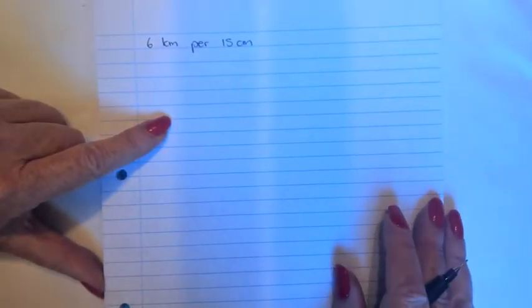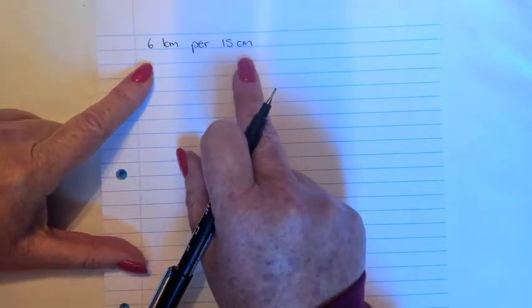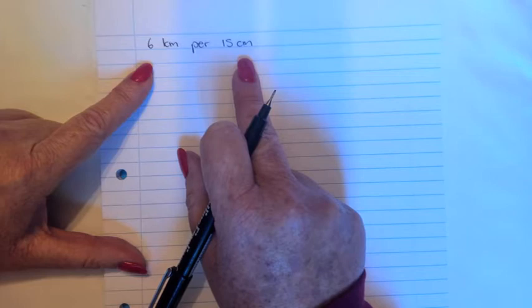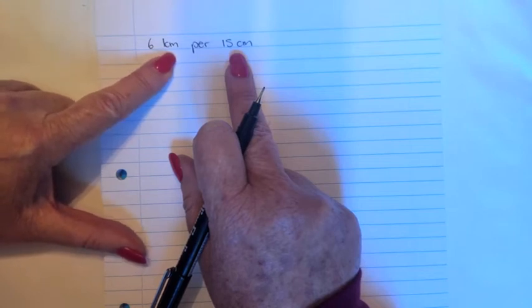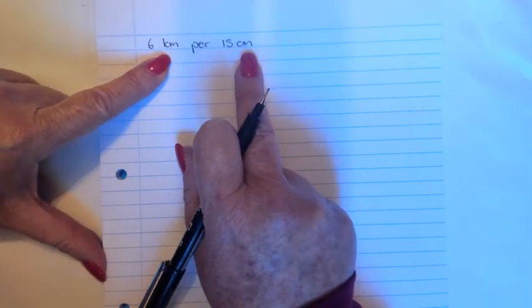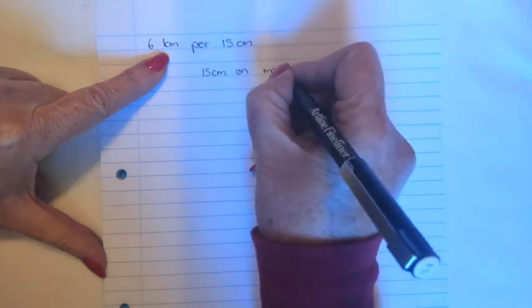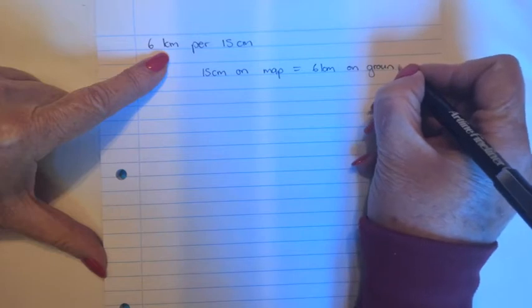So let's start with example one in section three point one. You are asked to change a word scale to a ratio scale. You've got two distances, six kilometers per 15 centimeters. So step number one is to write this down as equation. And the tip is always start at a map distance. Now one of them will be the map distance and one of them will be the real life distance. Now common sense should say to you, you do not get a map that is six kilometers in size. So obviously 15 centimeters is your map distance. So you will start off by say 15 centimeters on map equals six kilometers on ground. Or you can use other words like in reality.